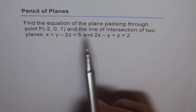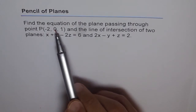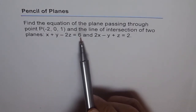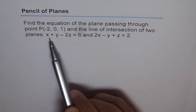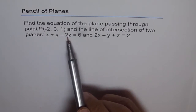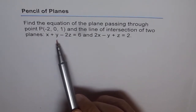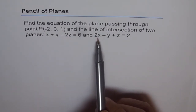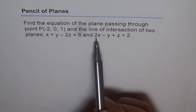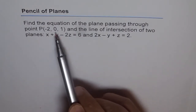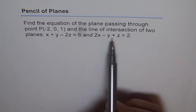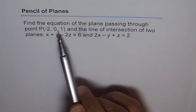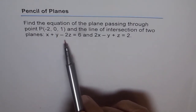This point is not on these planes — you can always test that out. If I plug in minus 2, 0, and 1, I don't get 6. Minus 2 minus 2 is minus 4; and for the second plane it gives minus 3, not 2. So the point does not lie on these two planes.